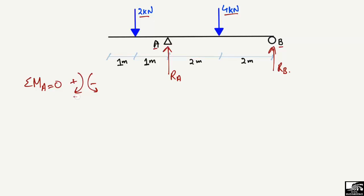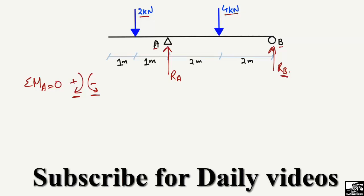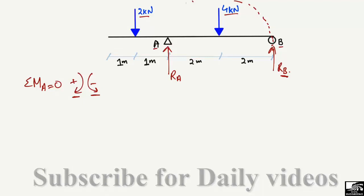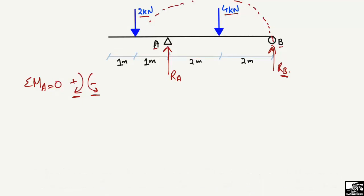Clockwise moment is positive and anti-clockwise moment is negative. All loads creating a clockwise moment about point A are positive, and anti-clockwise are negative. Starting with RB, which acts upward and creates an anti-clockwise moment about point A — so it is negative: minus RB multiplied by its moment arm, which is 2 plus 2 equals 4 meters. Then the 4 kN load creates a clockwise moment, so plus 4 multiplied by its distance of 2 meters.